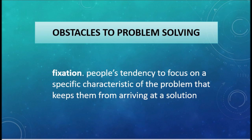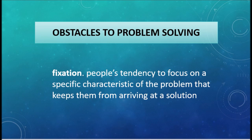What are the obstacles to problem solving? While doing problem solving, we face obstacles. Fixation is one of the obstacles we face very often. According to Gestalt psychologists, fixation is people's tendency to focus on a specific characteristic of the problem that keeps them from arriving at a solution. One type of fixation that can work against solving a problem is focusing on familiar use of an object. This is called functional fixedness — restricting the use of an object to its familiar function. When we assume an object is used only for a specific purpose, it limits our innovative understanding.